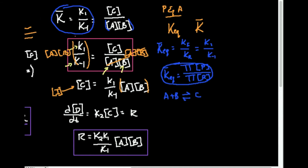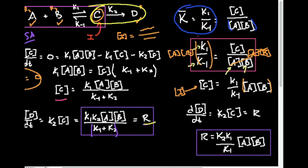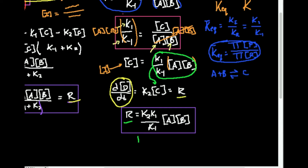Another similarity to the steady state approximation: I want to find the rate of the overall reaction. For this setup, the rate is just the last step — the conversion of the intermediate to product D. So the rate equals d[D]/dt, which equals k2 times the concentration of C. Since I just found an expression for [C], I plug that in. The rate by pre-equilibrium approximation is k2 times k1 over k-minus-1 times [A] times [B].